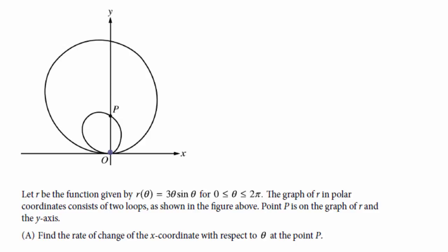Let's think about why it has two loops. When theta is zero, r is zero, and then as theta increases, we start tracing out the first loop all the way until theta equals pi. We've traced out the first loop from theta equals zero to theta equals pi. Then the second loop has a larger r — these are larger r values going from pi to two pi. Between sine of pi and sine of two pi, this part is negative, so it flips r onto the other side, and the magnitude of r is larger because of the three theta factor. So when we go from pi to two pi, we trace out the larger circle.